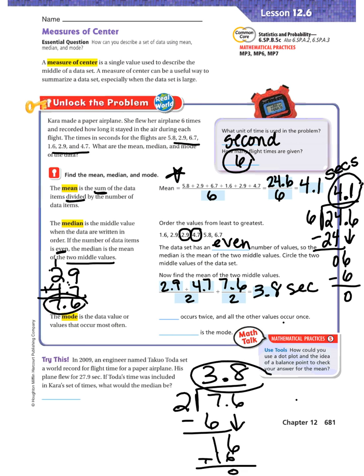Now, the mode is the data value or values that occurs most often. So here, all we have to do is look at our data set. And if we look closely at our data set, we're going to see that we have two numbers that show up twice. Everything else, all of the other numbers, just show up one time. So this one's easy. We just have to look and pay attention to the data set. We don't have to do any math at all. So 2.9 occurs twice. All the other values occur once. So 2.9 is the mode.